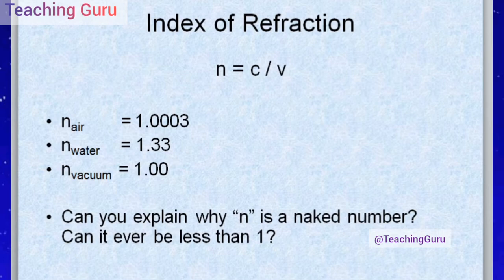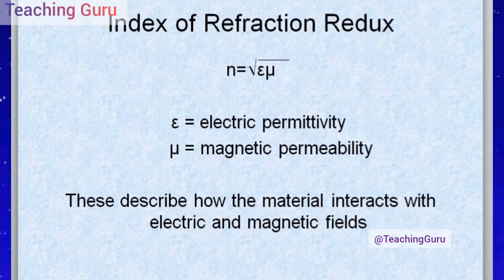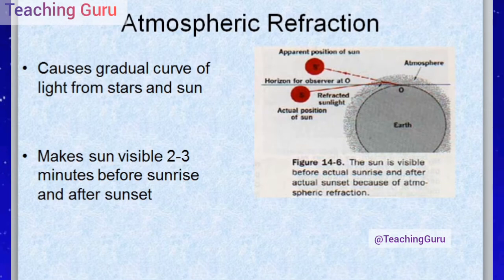The index of refraction can also be expressed as n = √(ψ·μ), where ψ is electrical permittivity and μ is magnetic permeability — if you have studied electrical and magnetic fields, you will be able to understand this. Atmospheric refraction is the gradual curving of light from stars and the sun toward the earth. When rays from the sun enter our atmosphere, they bend — that is called atmospheric refraction.